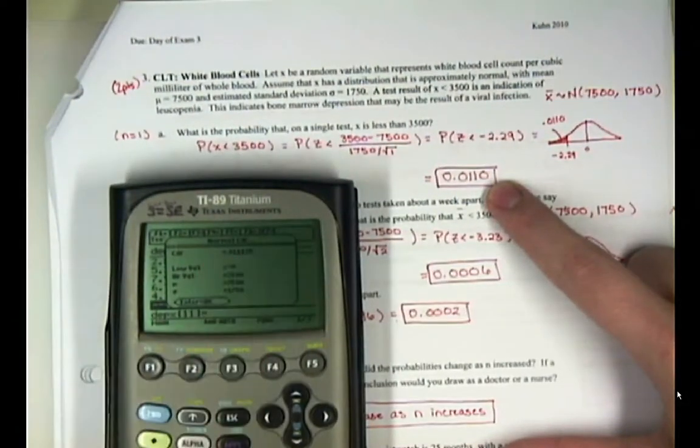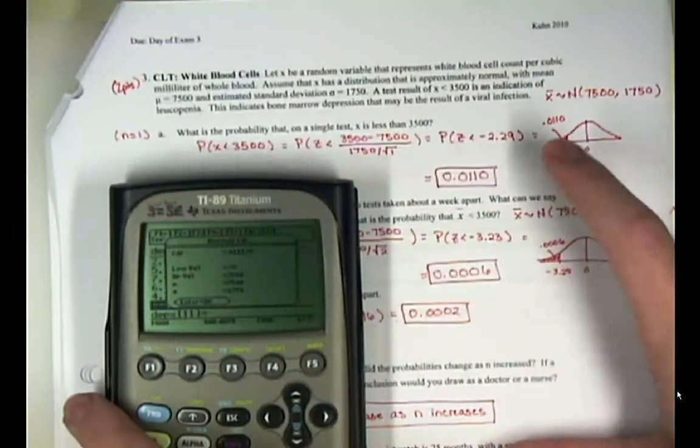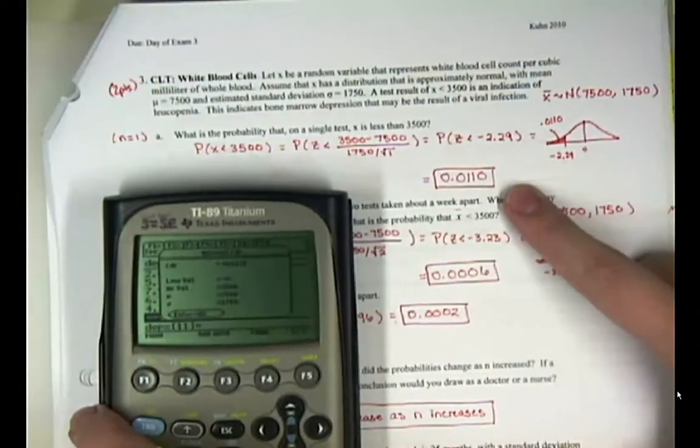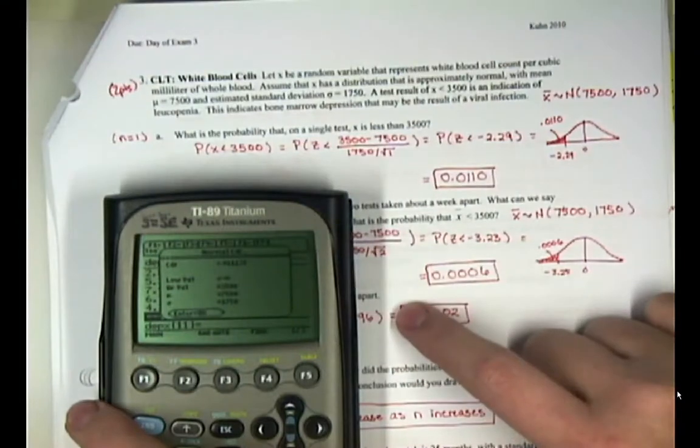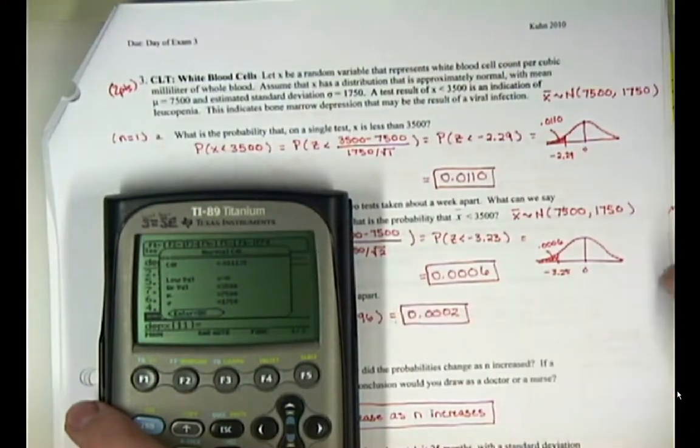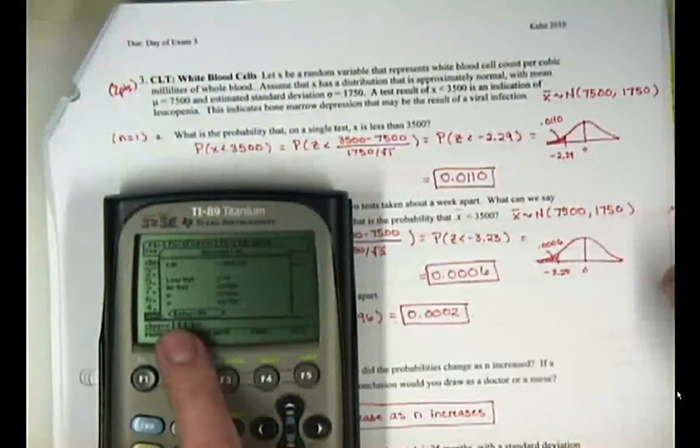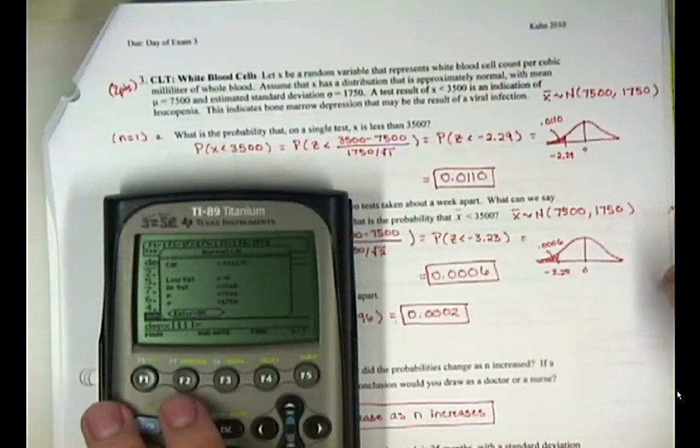And it can just do it for you in a matter of seconds. It has issues, though, if your sample size is greater than 1. You can't use this function if sample size is greater than 1, and that's the limitation on it. But just some cool things about this TI-89 Titanium. It really is a robust calculator that works very well for statistics.